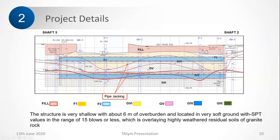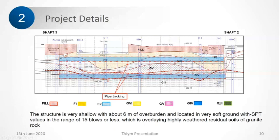The ground condition here has a top layer of fill, then fluvial sand F1 and F2, and G4, G5, G6, G3 are the different grades of weathered granite as denoted in the British classification. It's basically a soil — not a rock. It's completely soil with some amount of sand at the face, which will cause some stability issues at the face.